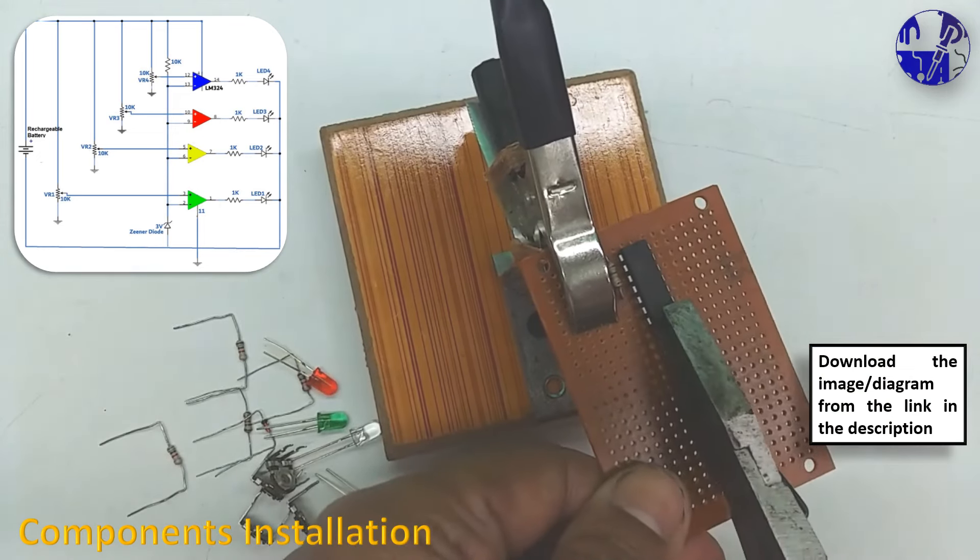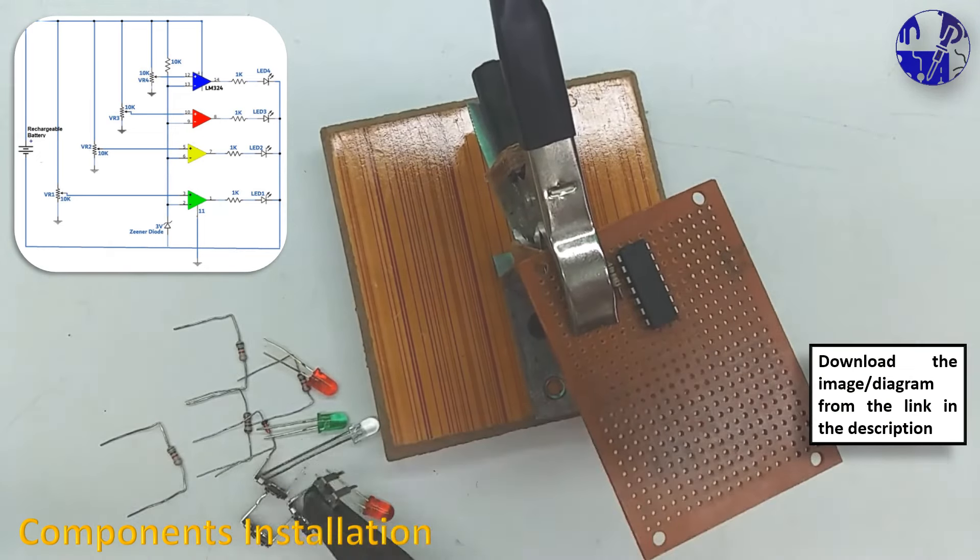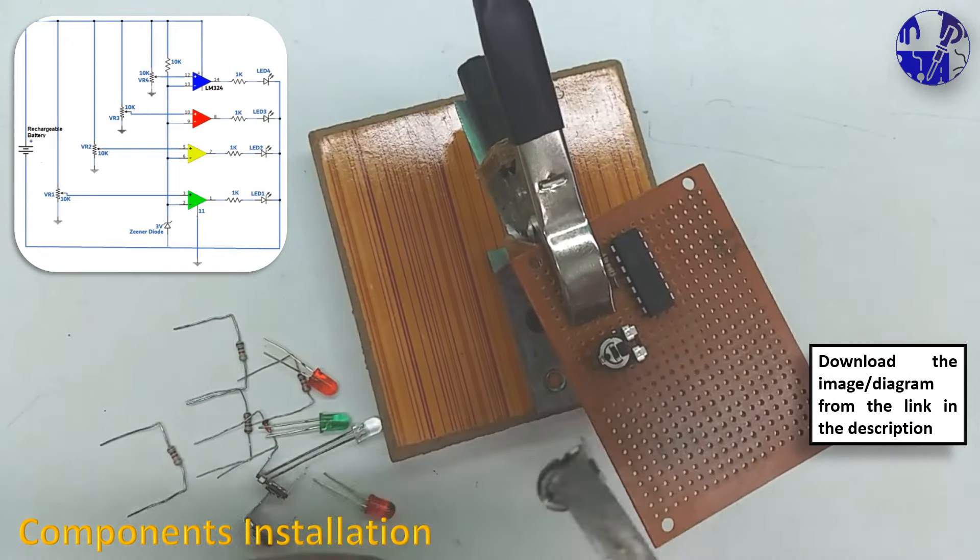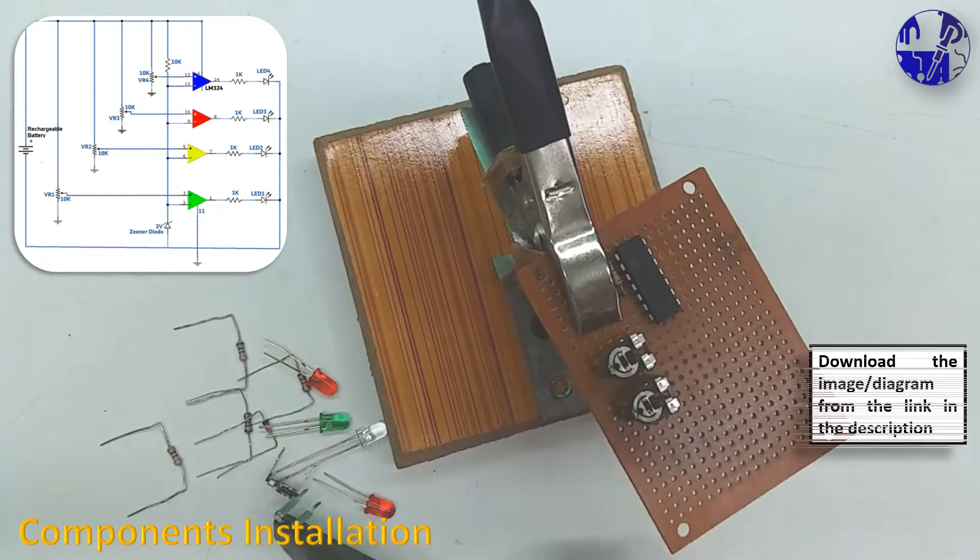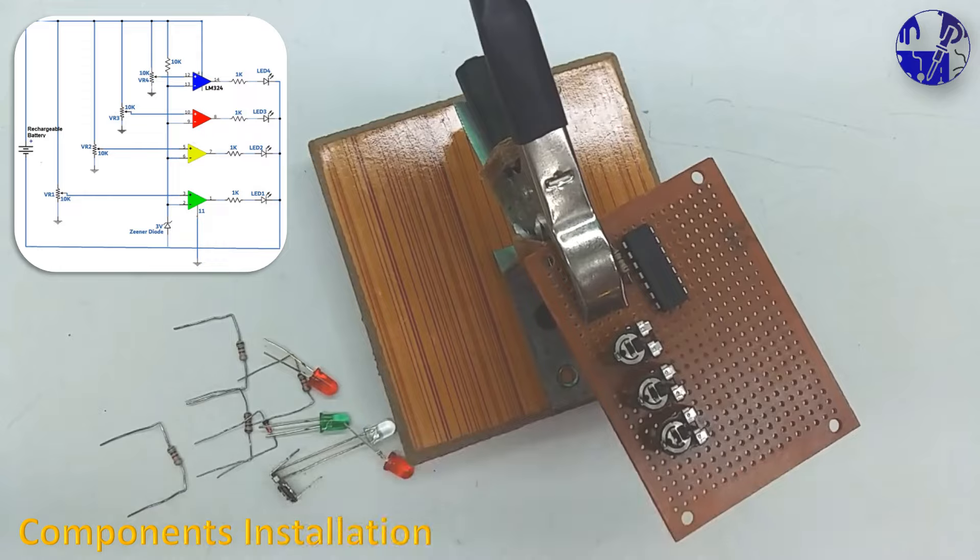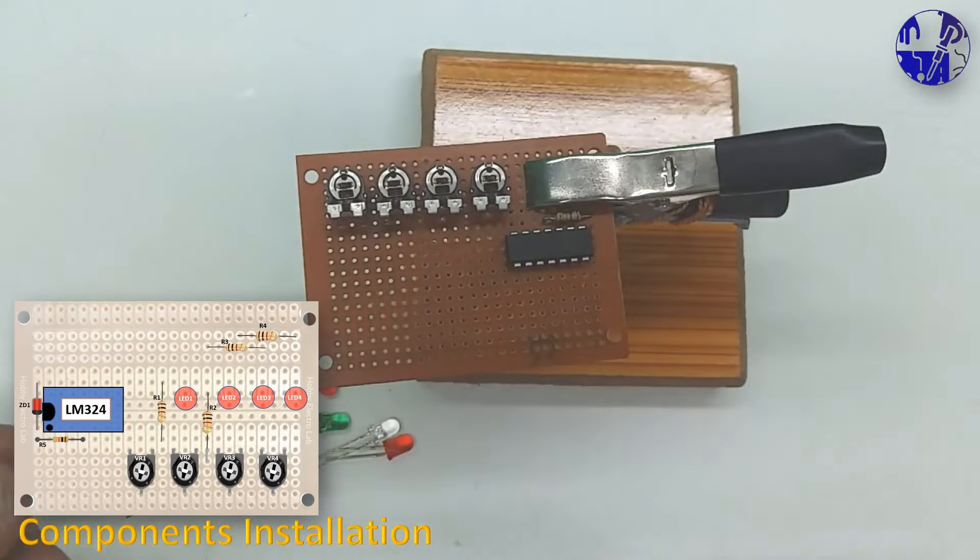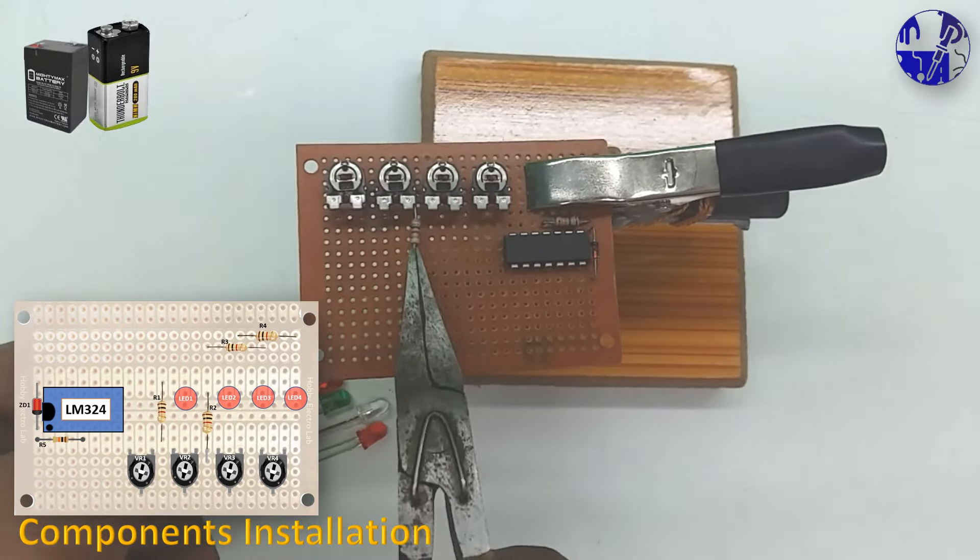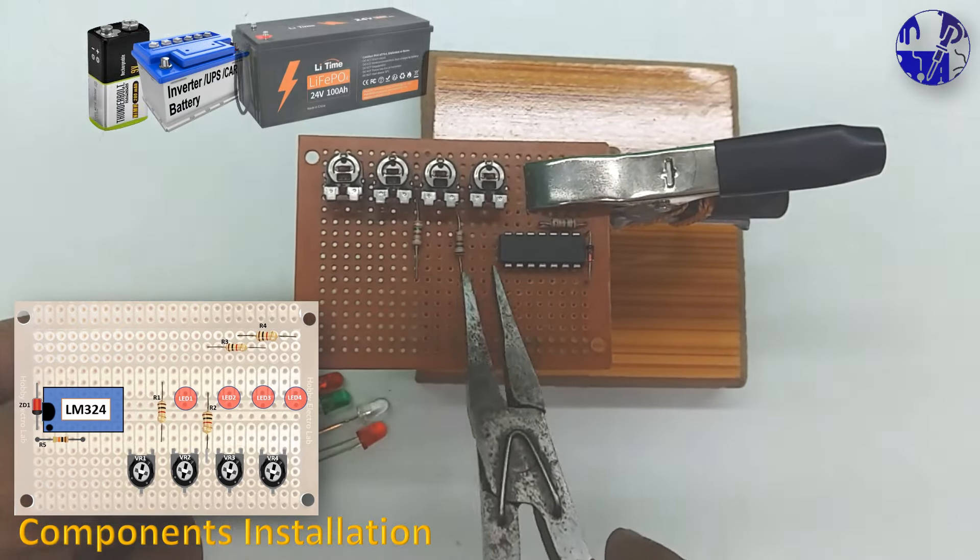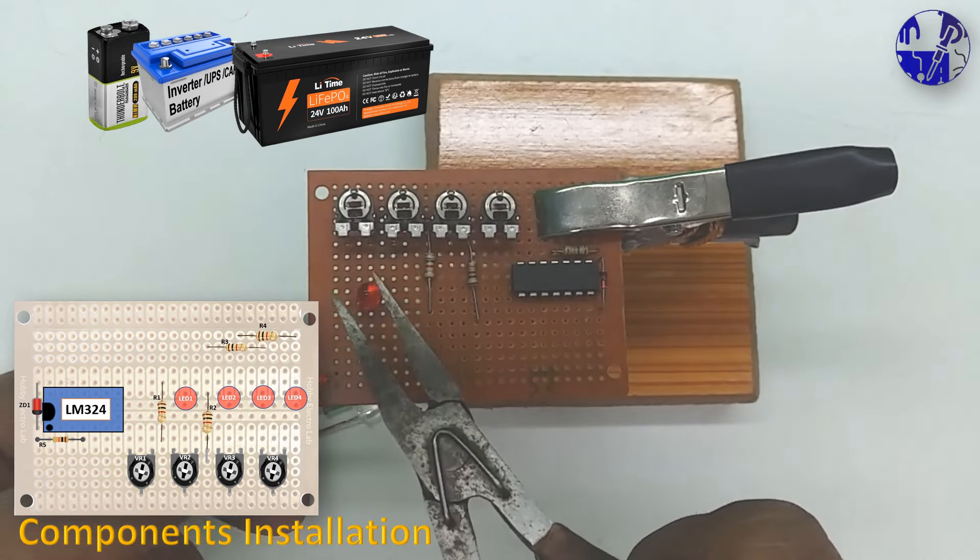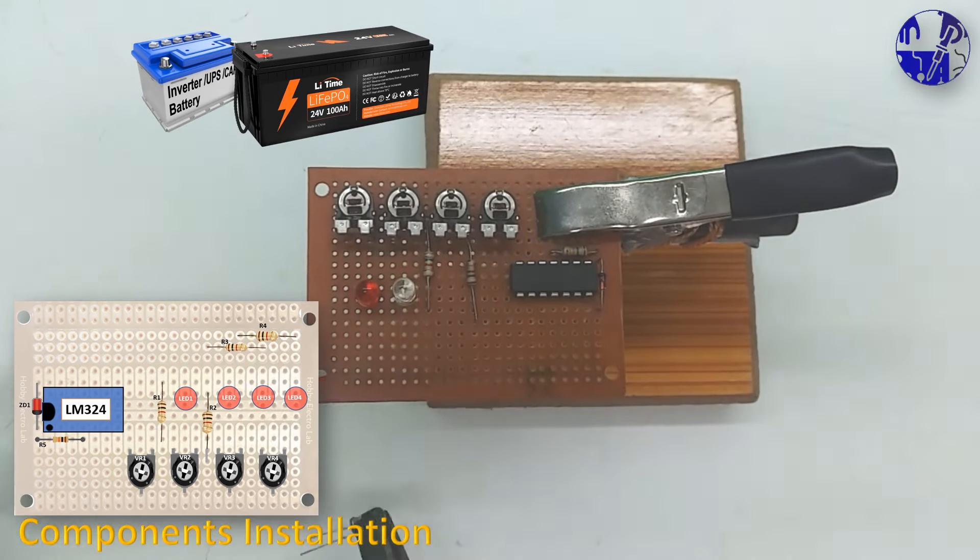Necessary images and diagrams can be downloaded from our website, link provided in the description section. This universal battery level indicator design accommodates 6-volt, 9-volt, 12-volt, and 24-volt batteries. Simply adjust the voltage settings using the four variable resistors in the circuit for each battery type.